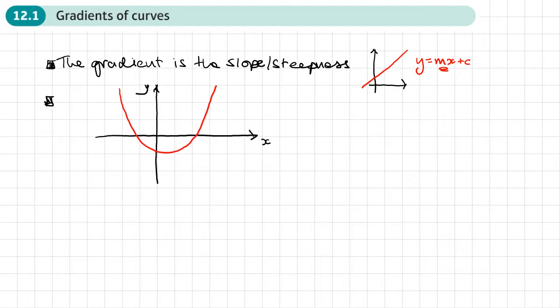Here I've got a curve, a quadratic, and at different points the steepness or gradient is different. For example, let's look at this point down at the bottom here. If I were to draw a line just touching it, that would be the gradient at this point.